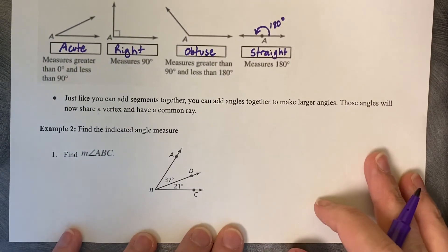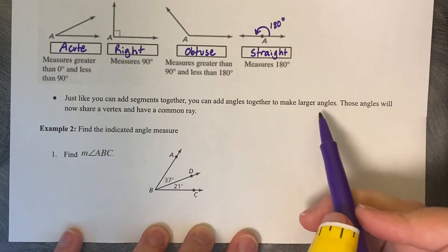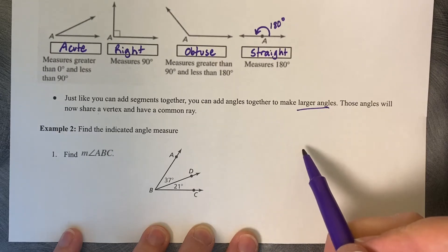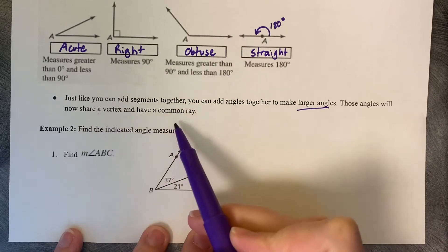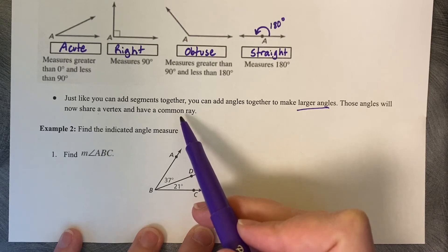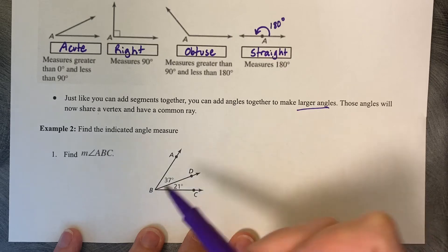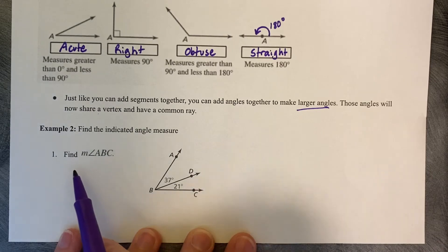So here's our note. Just like you can add segments together, you can add angles together to make larger angles. Those angles will now share a vertex and have a common ray. So this is when you cannot name your angle based on its vertex. You will have to name it using the three-letter method where the vertex is in the middle. So here's our example.